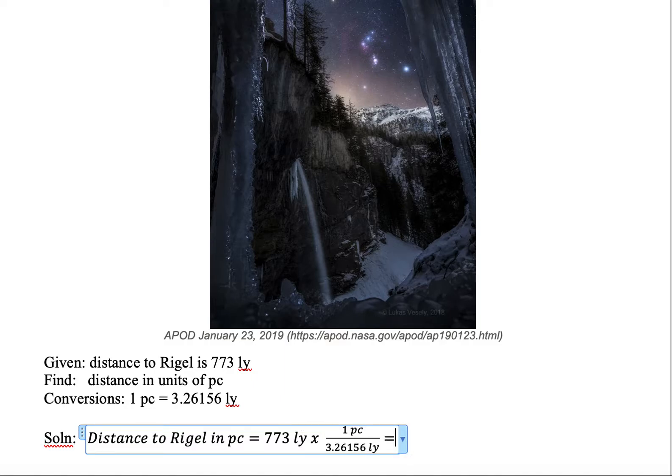So now we have distance to Rigel in parsec equals 773 light years multiplied by 1 parsec divided by 3.26156 light years. So we have this conversion.